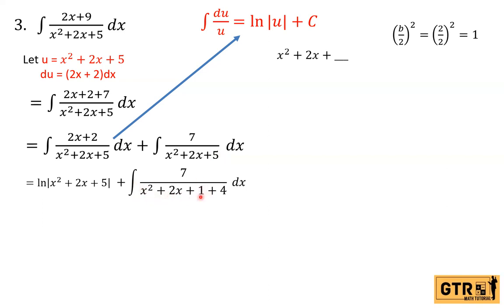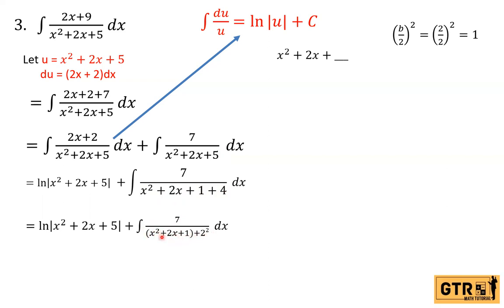We regroup and express the 4 as 2². So we have the integral of 7 over (x² + 2x + 1) + 2². And since x² + 2x + 1 is a perfect square trinomial, this is equal to (x + 1)².